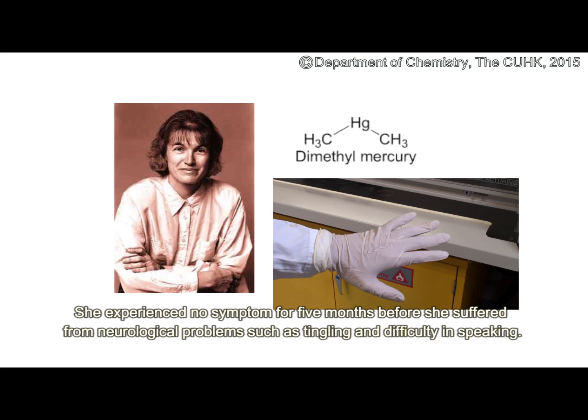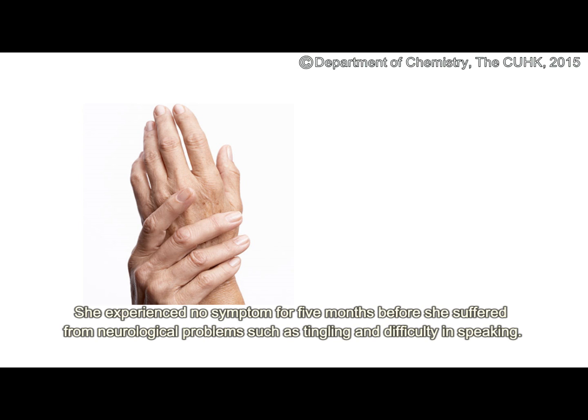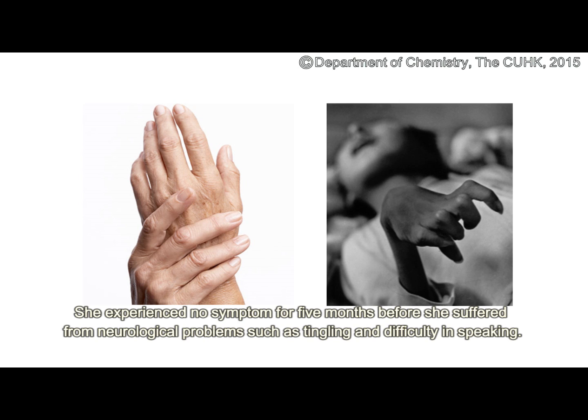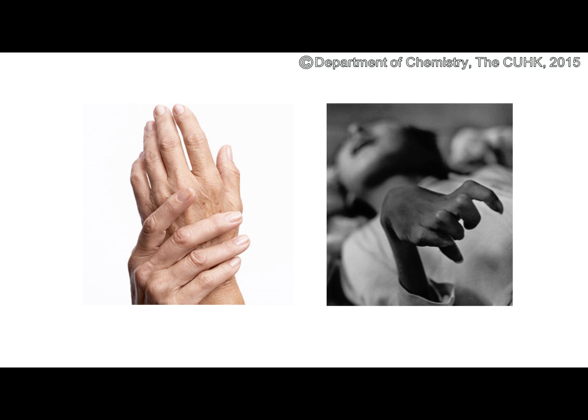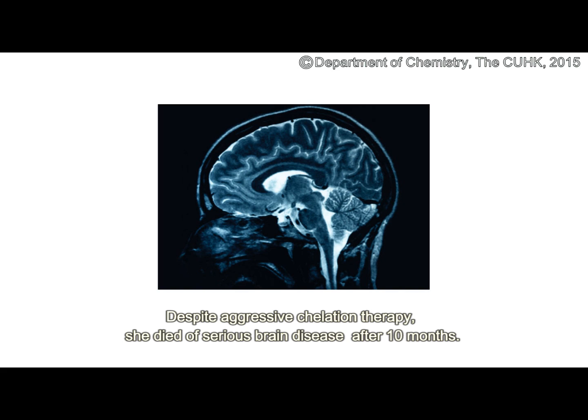She experienced no symptoms for five months before she suffered from neurological problems such as tingling and difficulty in speaking. She was later diagnosed with mercury poisoning. Despite aggressive chelation therapy, she died of serious brain disease after 10 months.